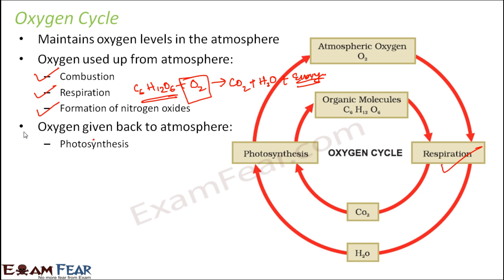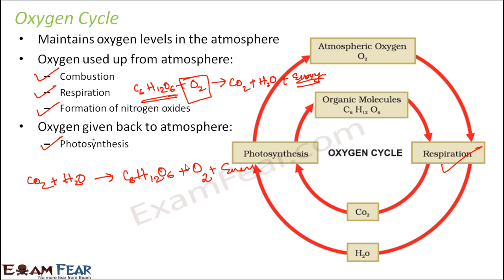Oxygen is given back to the atmosphere by the process of photosynthesis. In photosynthesis, carbon dioxide is taken up from the atmosphere and combines with water to form food in the form of glucose, and oxygen is released as a byproduct along with a lot of energy. So photosynthesis and respiration are like reverse processes — respiration takes up oxygen from the atmosphere and photosynthesis gives it back.